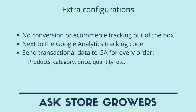So next to our normal Google Analytics tracking code we're going to need to make some changes to the Google Analytics code to send transactional data every time an order takes place. We'll send through things like which products were bought, how many of them, at what price, and which product categories they belong to.